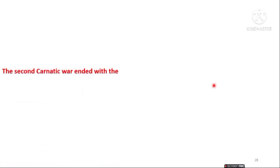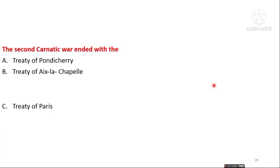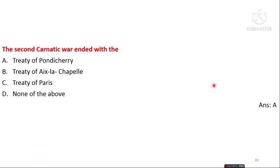The next question is: the Second Carnatic War ended with which treaty? The options are Treaty of Pondicherry, Treaty of Aix-la-Chapelle, Treaty of Paris, and none of that. The answer is option A — the Treaty of Pondicherry was the result of the Second Carnatic War.